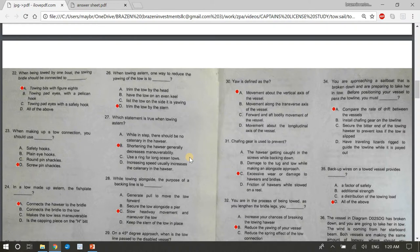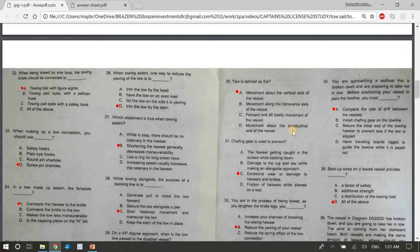27, which statement is true when towing astern? The answer is B, shortening the hauser generally decreases maneuverability. 28, while towing alongside the purpose of a backing line is to blank. The answer is C, slow headway movement and maneuver the tow. 29, on a 45 degree approach, when is the tow line passed to the disabled vessel? The answer is C, just before the towing boat's bow crosses that of the tow. 30, yaw is defined as the A, movement about the vertical axis of the vessel. 31, chafing gear is used to prevent. The answer is C, excessive wear or damage to hausers and bridles.